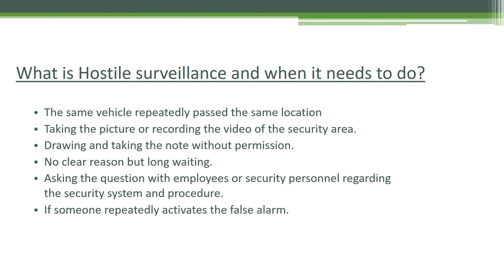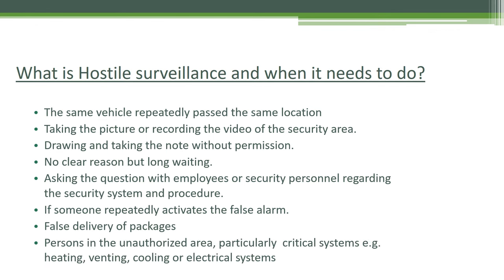Number six, if someone repeatedly activates the false alarm — there could be another intention, such as wanting to know the security response when the alarm is triggered. The CCTV operator must conduct hostile surveillance. Number seven, false delivery of a package — if a package that is not supposed to be delivered to the office is delivered, the operator must conduct hostile surveillance on the person delivering it. Number eight, a person found in an unauthorized area — especially critical areas such as heating, ventilation, cooling, or electrical systems — requires immediate hostile surveillance.